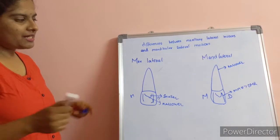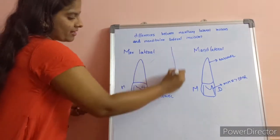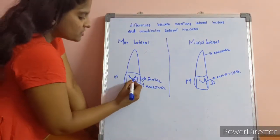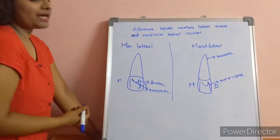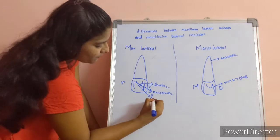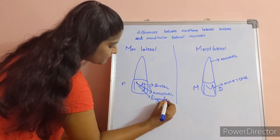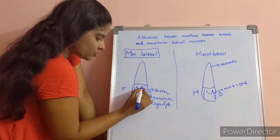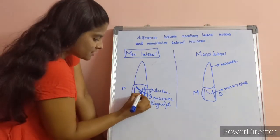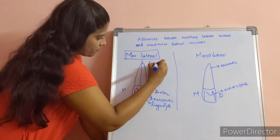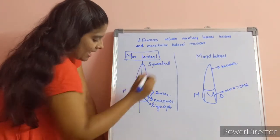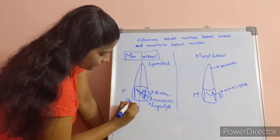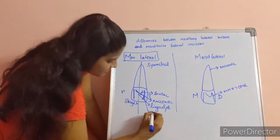Now coming to the lingual aspect of the maxillary lateral incisor: there is a cingulum similar to the central incisor, but it is smaller and narrower. Below the cingulum, a lingual pit is present — this is an important feature of the maxillary lateral incisor. The tooth is symmetrical. The mesial marginal ridge is slightly straight, while the distal marginal ridge is slightly curved.